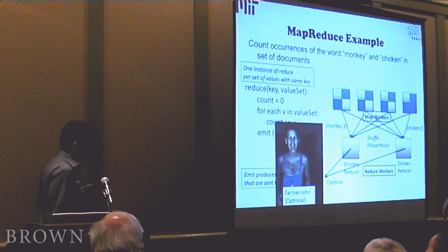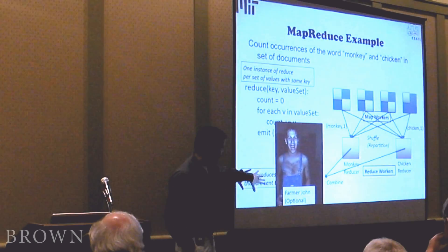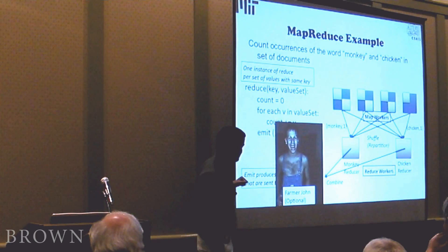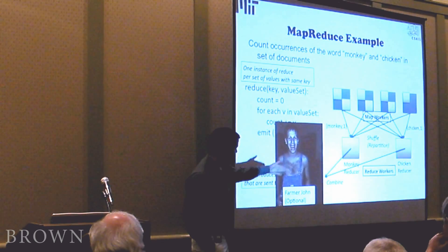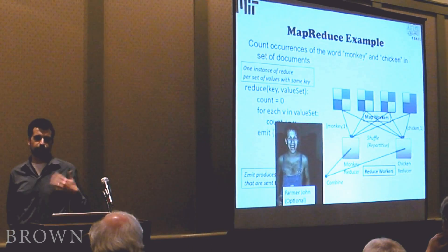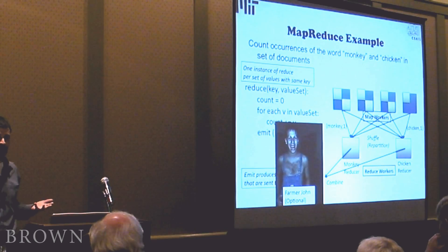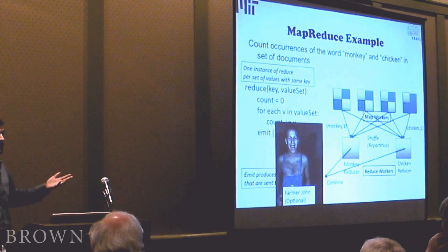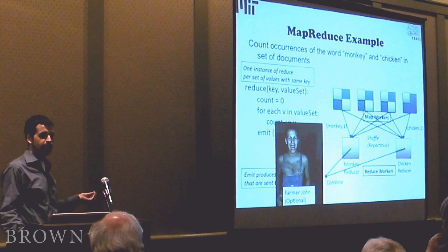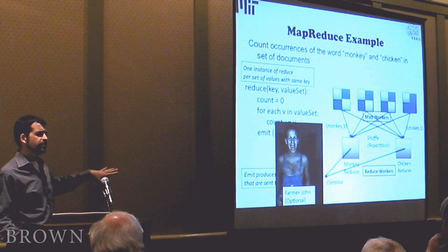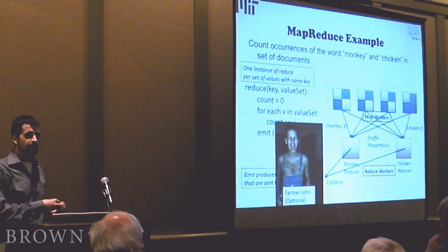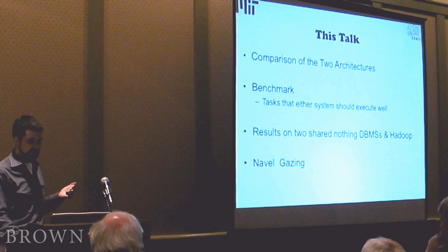Optionally there's a combiner step — so Farmer John who wants his count of monkeys and chickens does this combiner step to collect the records back. In MapReduce it's also possible to simply have the reduce workers write the results of their intermediate computations out to disk, which can then be used in a subsequent map or reduce operation. You don't have to necessarily collect the results to one final user. For all the results I'm going to present in this talk, I'll be showing results where this combination has been done; the paper reports results with and without combinations.